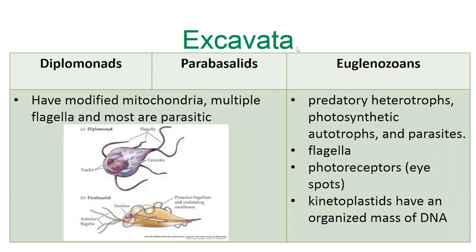Now we'll look at Excavata, which includes three subgroups: the diplomonads, parabasalids, and the euglenozoans. The first two both have modified mitochondria, multiple flagella, and are almost all parasitic. The euglenozoans are a pretty diverse group — they can be predatory heterotrophs, photosynthetic autotrophs, or parasites. They have flagella, photoreceptors which are eye spots, and kinetoplastids, which are a special kind of euglenozoan that have organized masses of DNA.